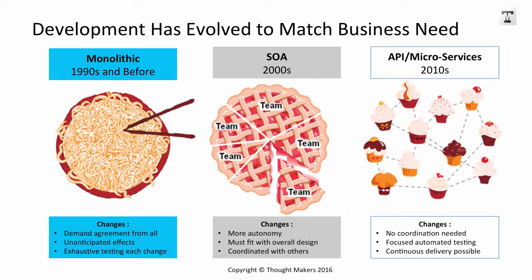In the 1990s and previous to that, all applications were built in a monolithic manner — large, complicated, integrative applications, sometimes called spaghetti code. The problem was that when you wanted to make changes to keep pace with the business, everybody had to agree on every single demand. There were also unanticipated effects when a change was made, and you had to do exhaustive testing on each and every change — expensive and slow.